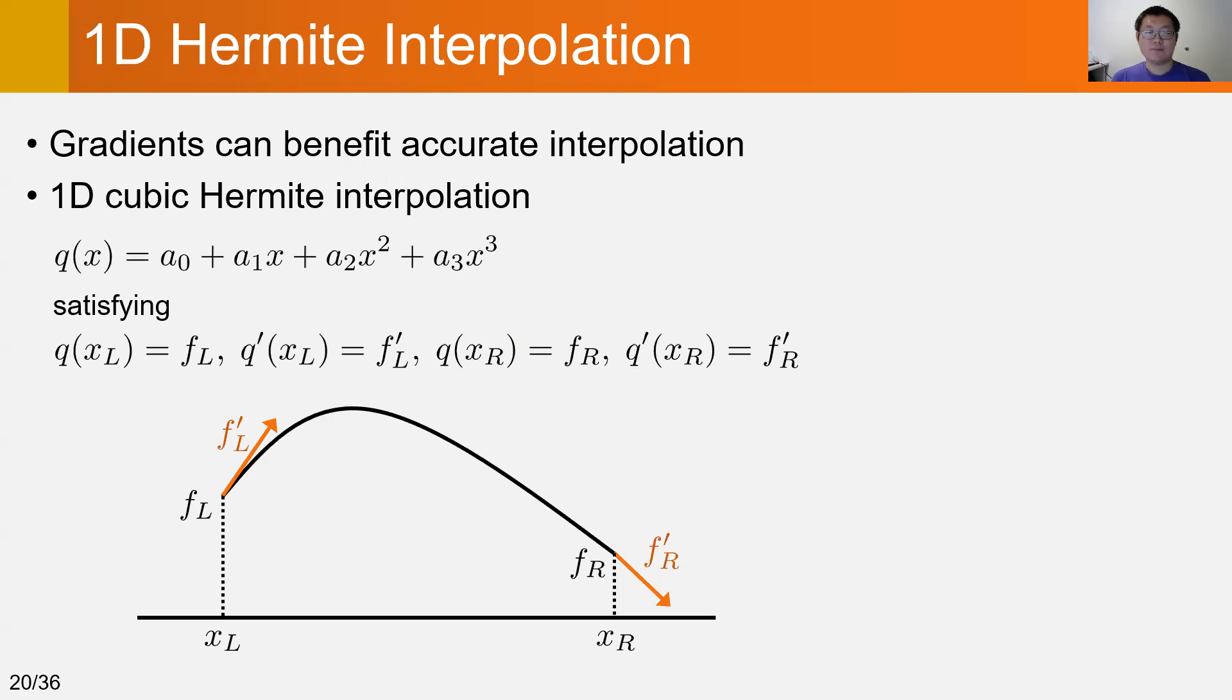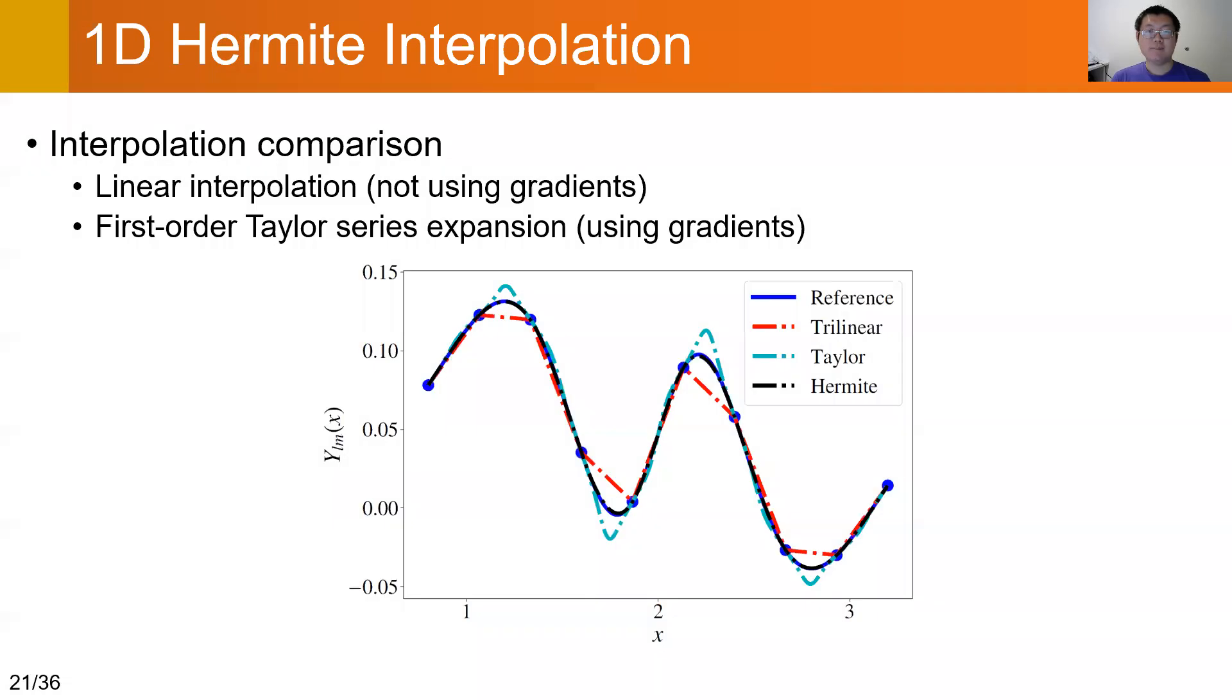The gradient constraint can improve the interpolation accuracy. In this example, we compare different interpolation methods for computing SH coefficient. Two baseline methods are the traditional piecewise linear interpolation and the one based on the first-order Taylor series expansion.